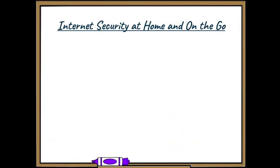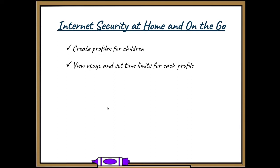Let's start with an understanding of what's in these packages, beginning with Internet Security at home and Internet Security on the Go. Customers will be able to create profiles for children — especially important right now — and view usage and set time limits for each profile. They can also block access to specific sites; for example, during the day they don't want their kids on Facebook, they can block that, and then set a time limit to allow access after school.